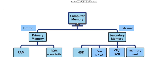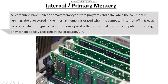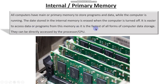There are two kinds of computer memory. One is primary memory or internal memory, and the second is secondary memory or external memory. All computers have primary memory to store programs and data while the computer is running. The data stored in internal memory is erased when the computer is turned off — this is the biggest disadvantage of internal or primary memory. It is, however, the fastest of all forms of computer data storage.